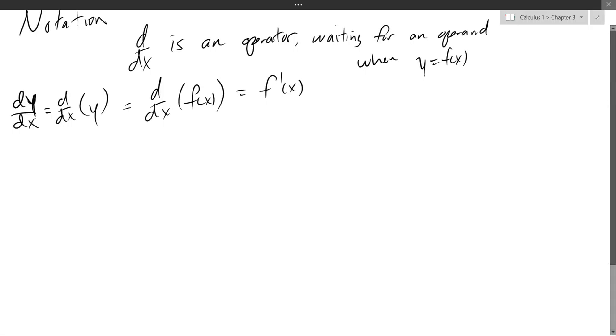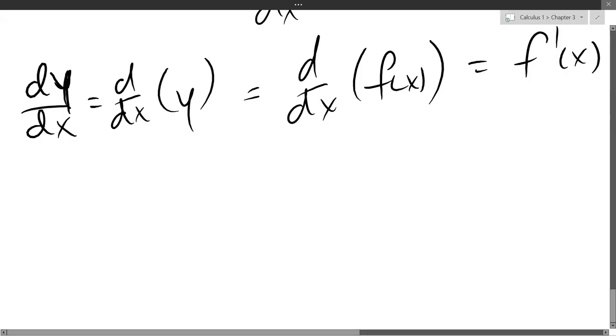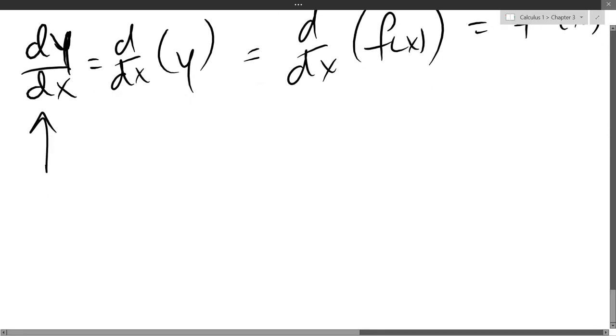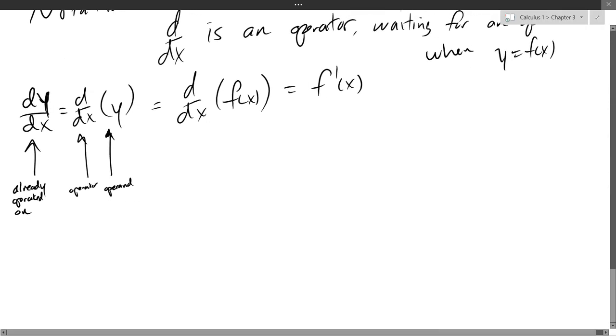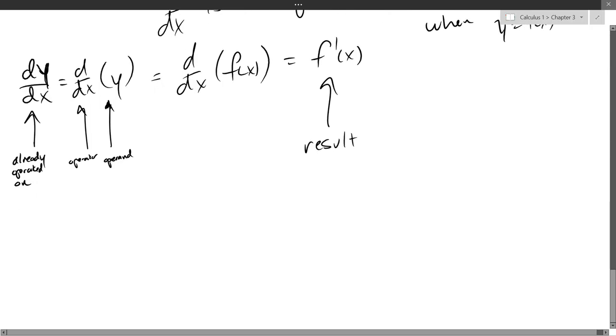And you can also write it as dy dx. Now, these two look really similar. So we'll talk about the difference between these two. They mean the same thing, but on the left side, this is already operated. This is not an operator anymore. This has already been operated on. On the right side, there's an operator and an operand. Whichever way you want to write it.